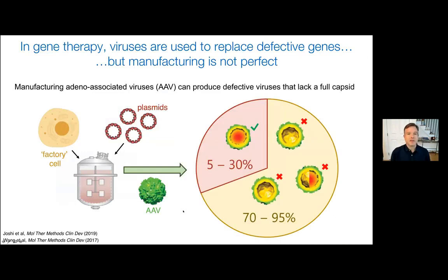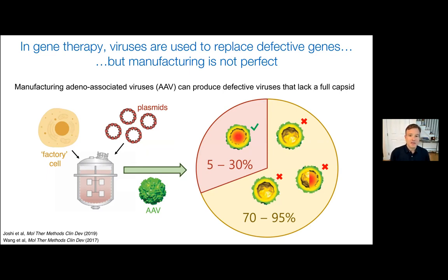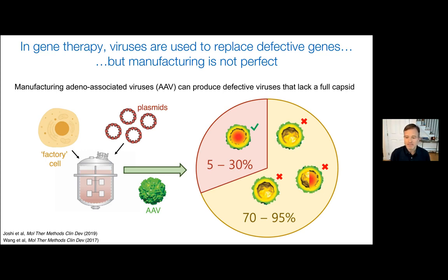Let me first define the problem. Viruses have shown great promise as a way to achieve gene therapy, where a defective gene can be replaced by a good one. But the manufacturing is not perfect — it turns out to be very difficult to manufacture these viruses with the fidelity that's needed. One particular virus, the adeno-associated virus or AAV, has shown particular promise as a delivery tool for gene therapy. Not all viruses that are made have a full capsid inside — some have incomplete capsids, which of course is problematic.